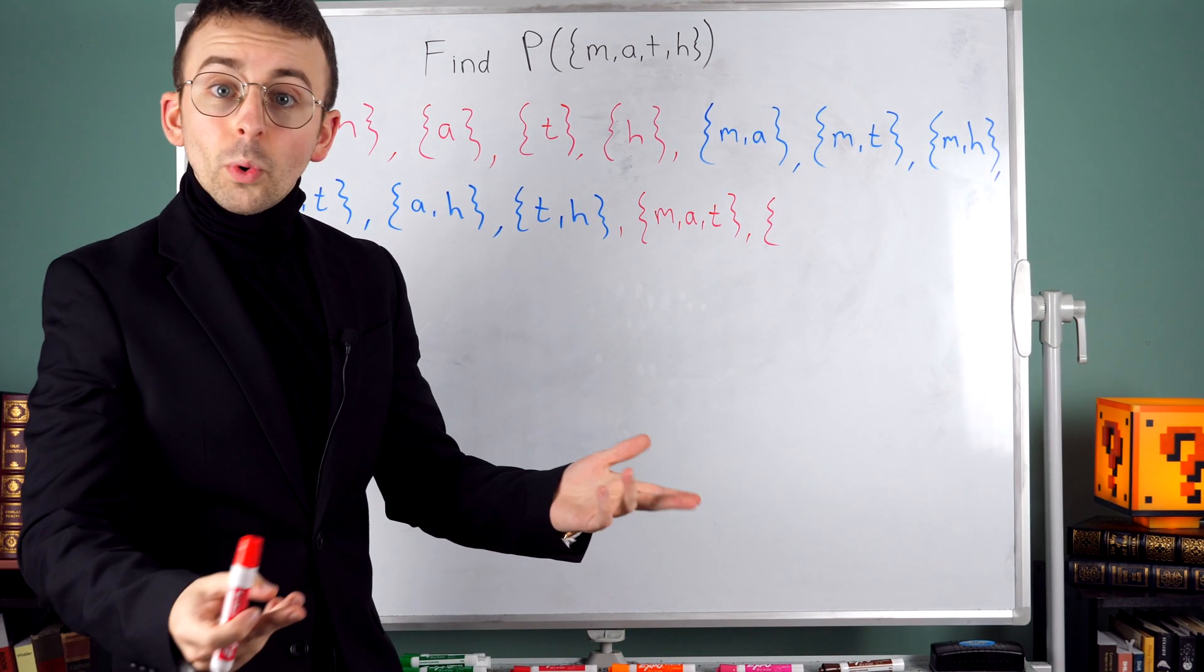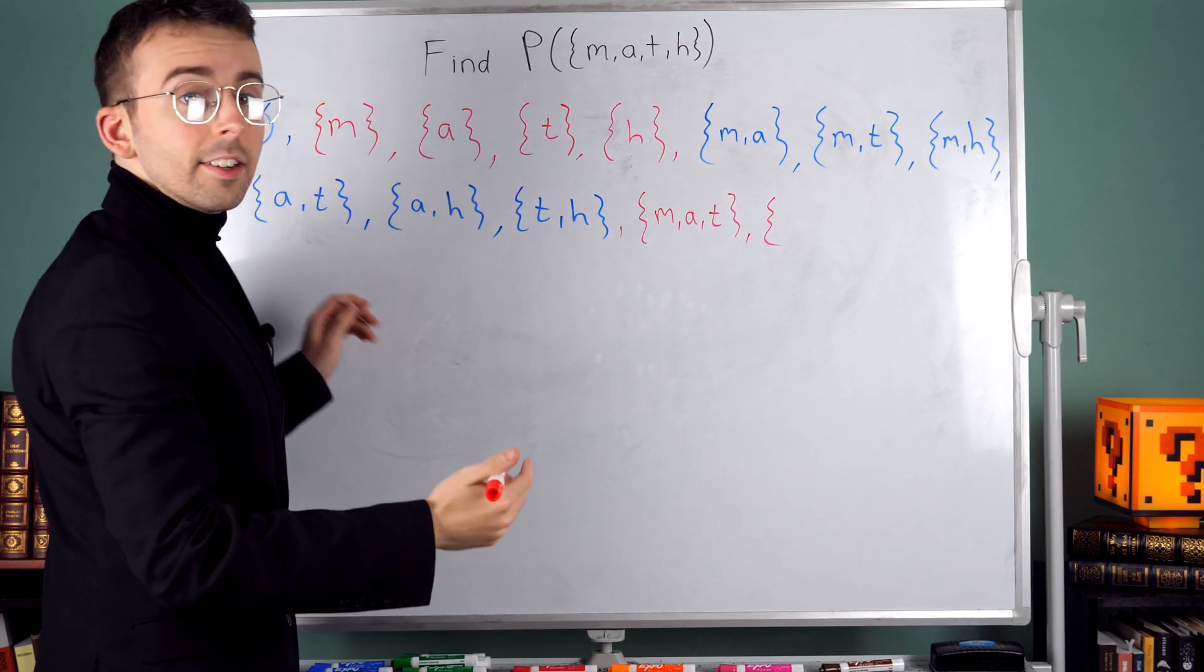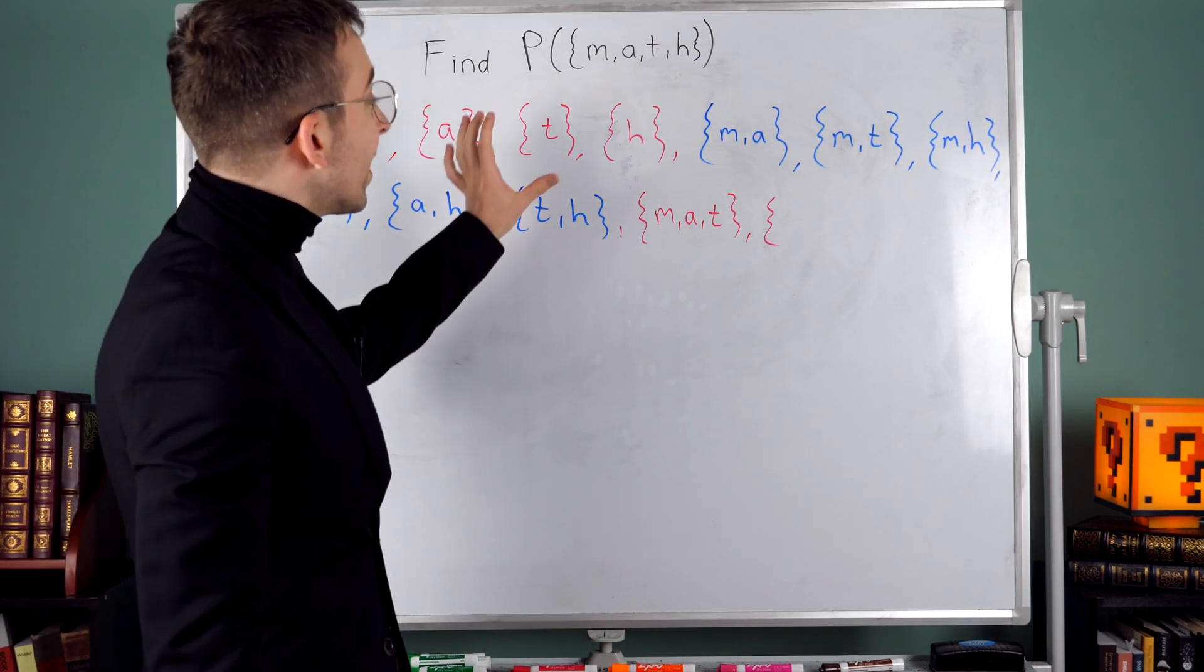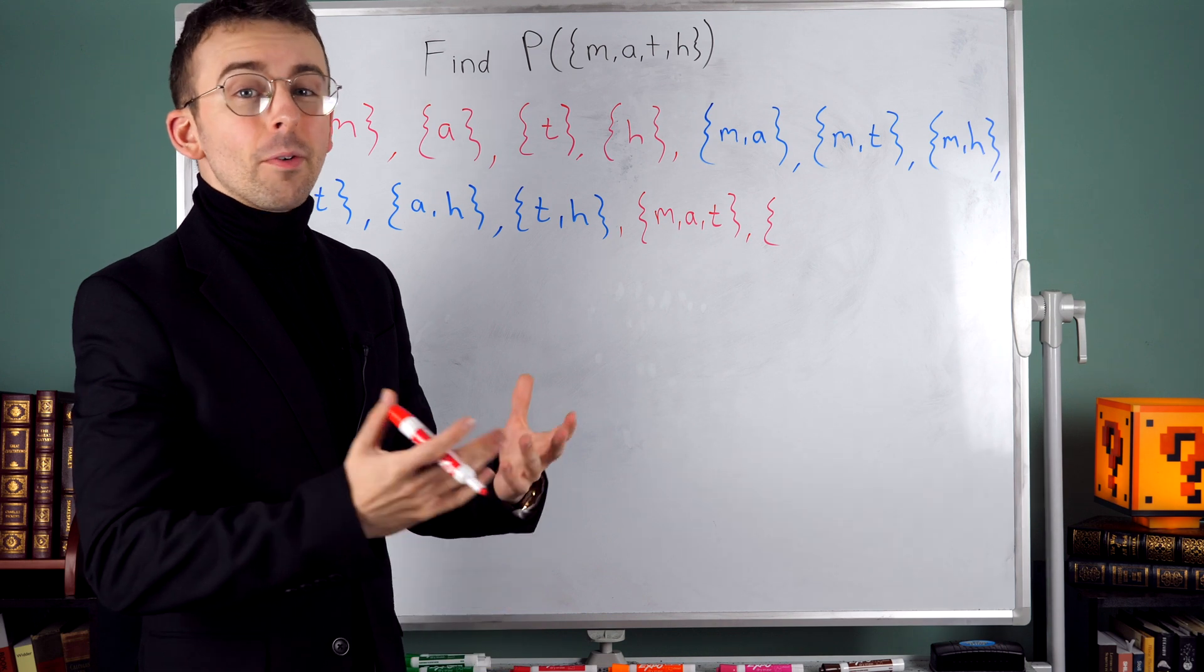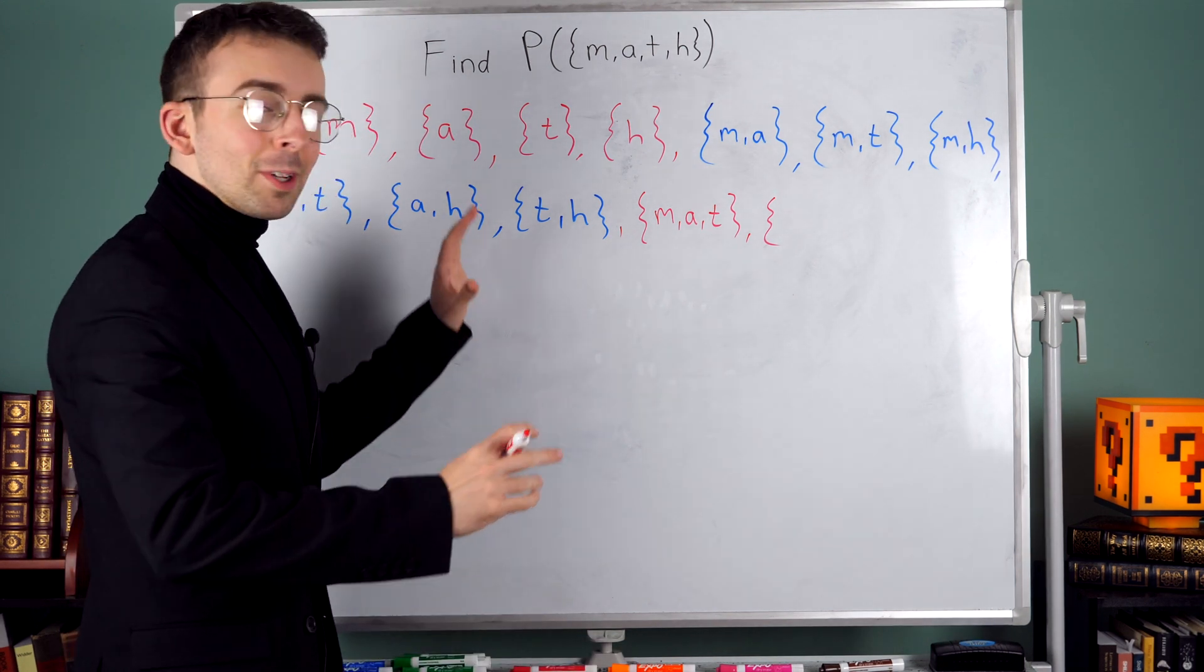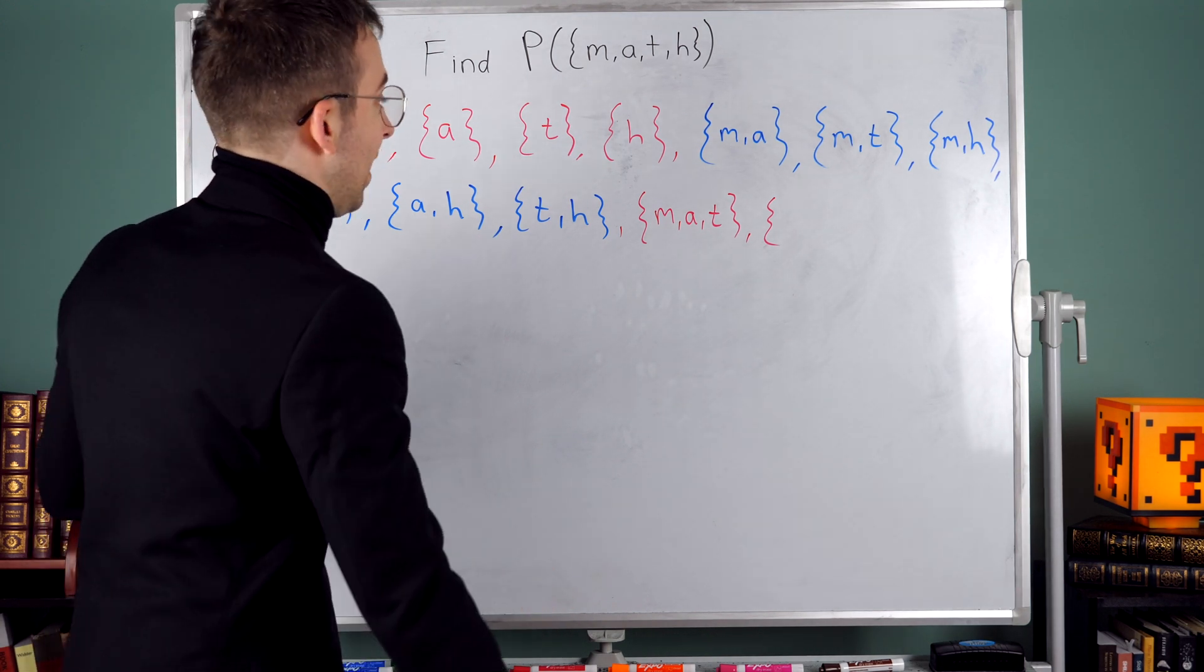All right, what's next? Well, how about the subset containing m, a, and h? Notice I'm trying to think through all of these in a very logical pattern so that I don't miss any of them, because I really don't want to have to read through these after the fact and try to figure out which one I missed.